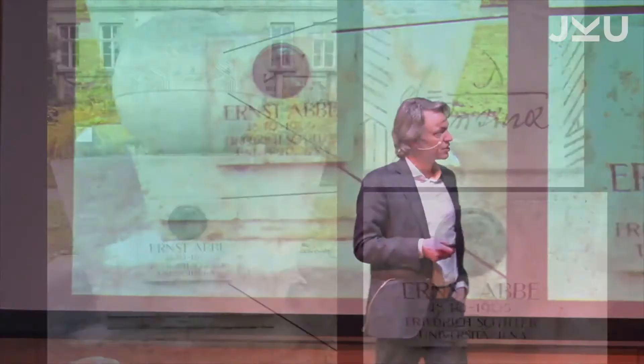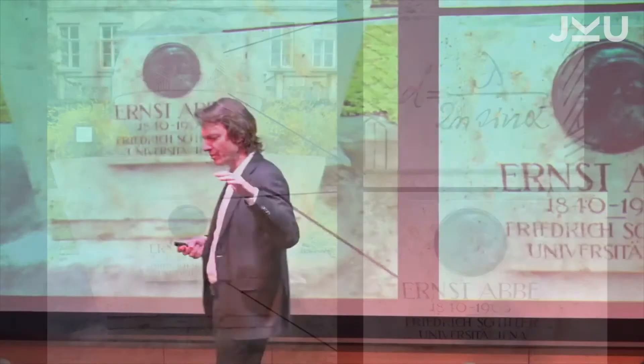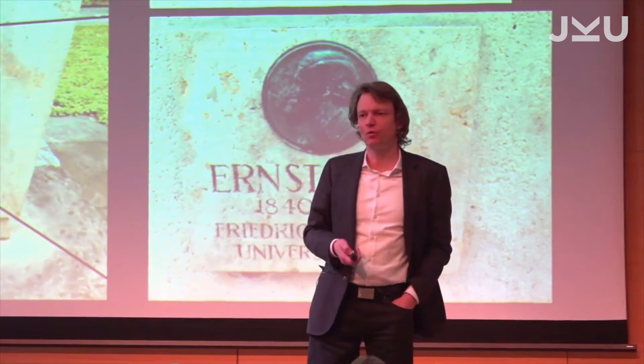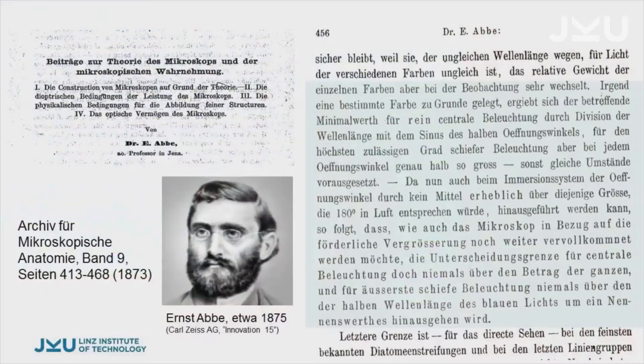Lambda is the wavelength. The closest distance d you can actually resolve in a microscope is limited by the wavelength divided by two, and some other numbers which are approximately one: sine alpha is one, the refractive index n is one. So: half the wavelength. This formula is on the monument. And this is the paper from 1873 — a theoretical paper, 56 pages.